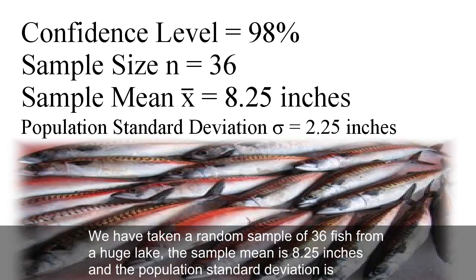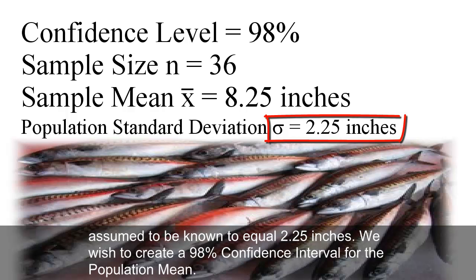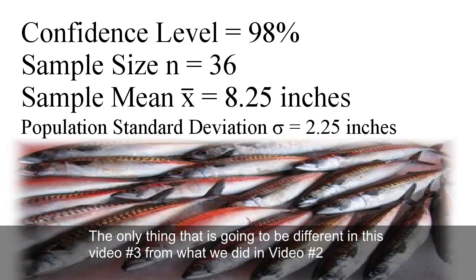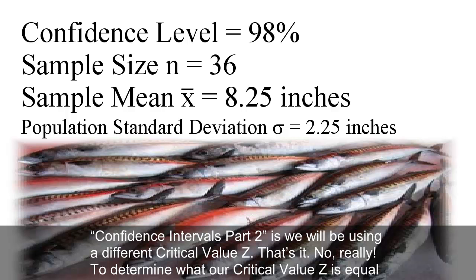We have taken a random sample of 36 fish from a huge lake. The sample mean is 8.25 inches, and the population standard deviation is assumed to be known to equal 2.25 inches. We wish to create a 98% confidence interval for the population mean. The only thing that is going to be different in this video number three from what we did in video number two, confidence intervals part two, is we will be using a different critical value z.